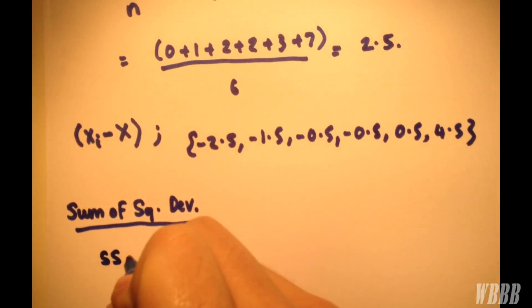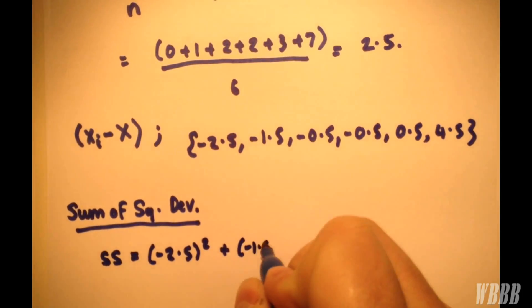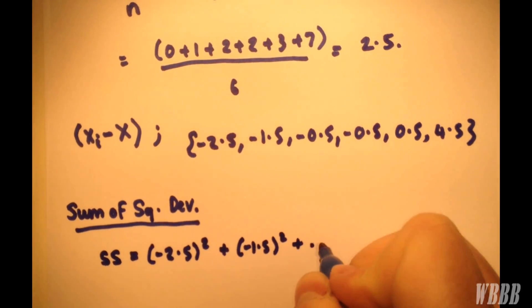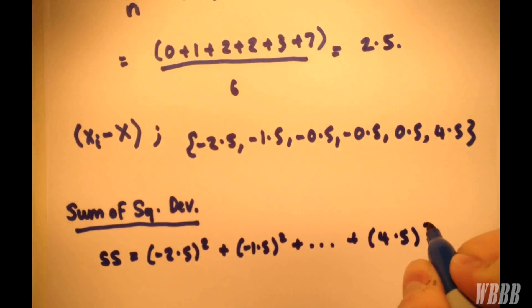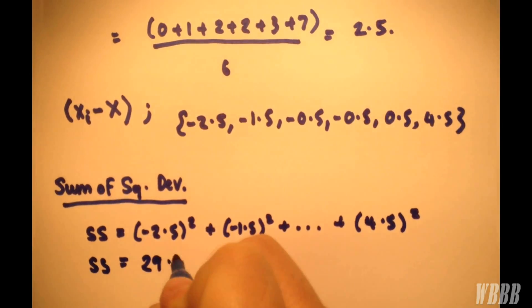So the sum of squared deviations is equal to minus 2.5 squared plus minus 1.5 squared all the way through to 4.5 squared. And that, of course, gives us 29.5.